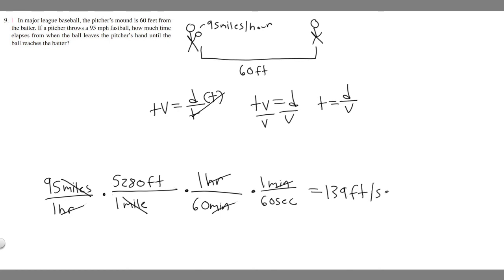That's our new velocity. We have them in the correct units now so all we have to do is plug in. Our time equals the distance traveled which is 60 feet over our velocity which is 139 feet per second. When you do this, your time in seconds is going to be 60 divided by 139.